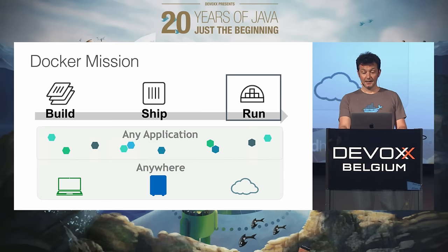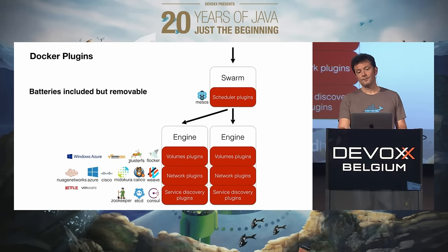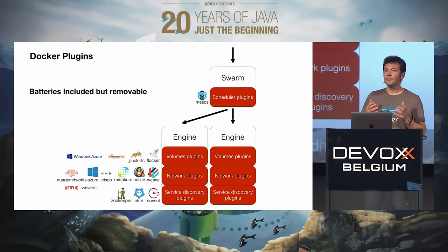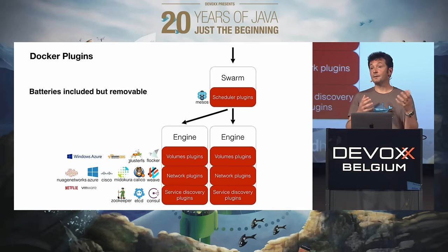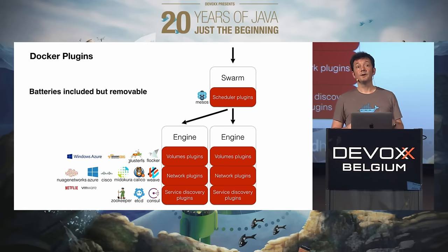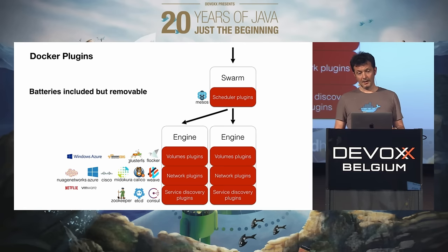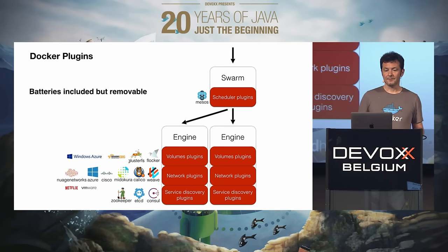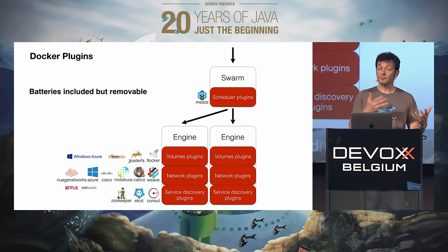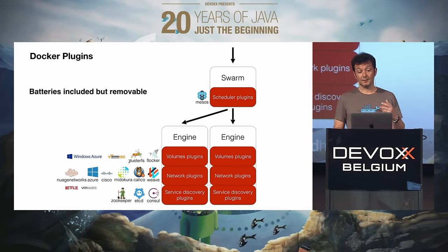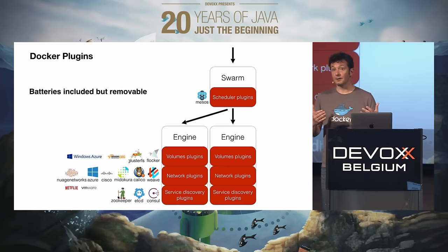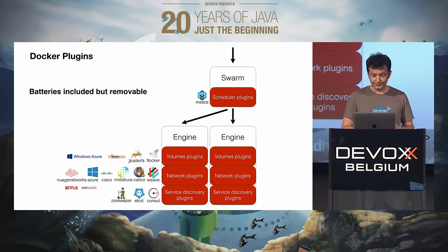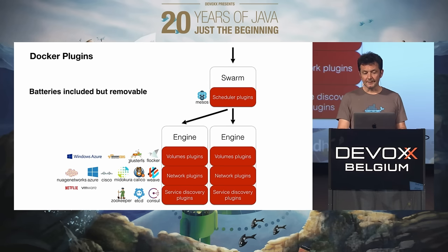Docker is a private company, so we need to make money. Our business model is to build commercial solutions based on our open source ones. In Hub you can have one private repo and pay for more. We also have Docker Trusted Registry that you can buy and install behind the firewall, with enterprise features like LDAP integration and Active Directory. One philosophy behind Docker is batteries included but replaceable — we build plugins for many aspects of the tools. For Swarm you can plug in a different scheduler; there's a Swarm-Mesos integration. For the engine there are volume plugins and network plugins — six of them. We have overlay networking built in with 1.9, but if you don't like the way it's done you can switch to one of the plugins. For service discovery it's pluggable with Consul, etcd, and Zookeeper.